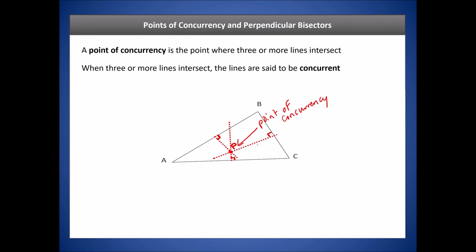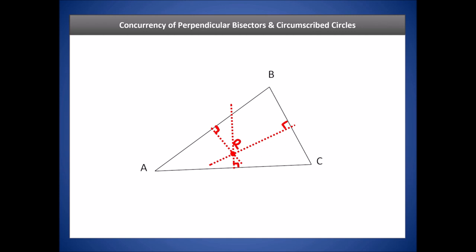This is a special property of perpendicular bisectors for the sides of a triangle. A perpendicular bisector is a line segment that meets another segment at a right angle and cuts it in half — so each bisected segment has two equal halves. Now let's reconstruct and enlarge that figure. If we call the point of concurrency P, it turns out that the distance from P to each of the vertices of the triangle is the same.